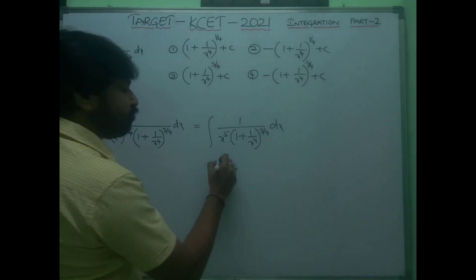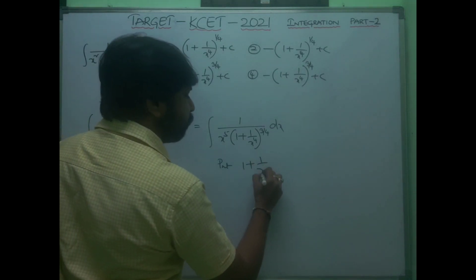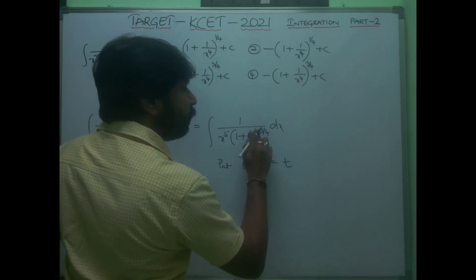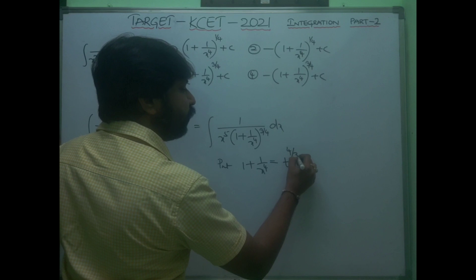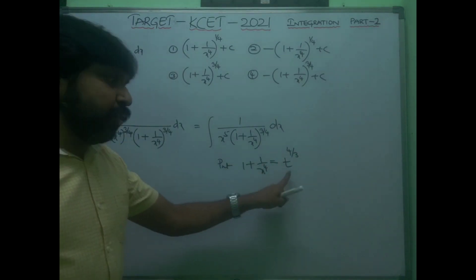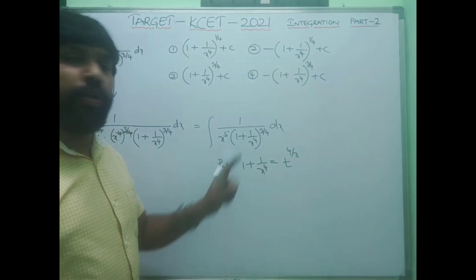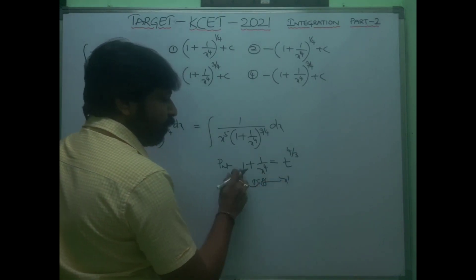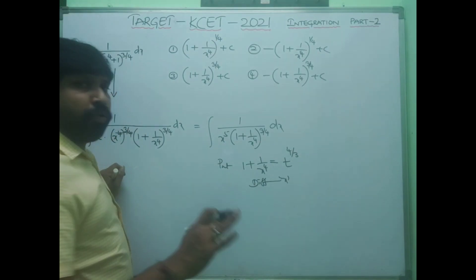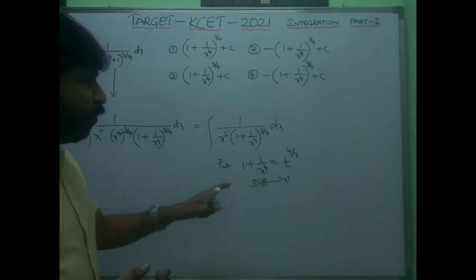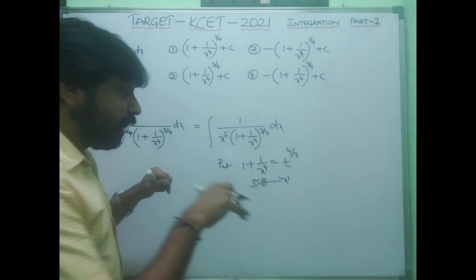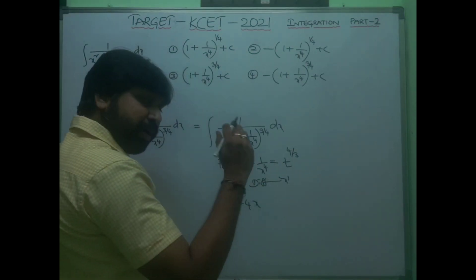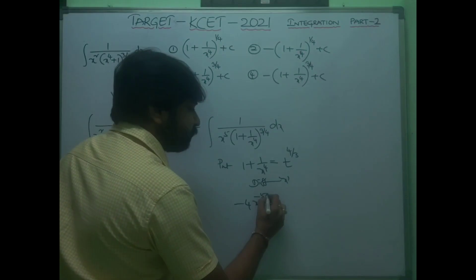Now put t = 1 + 1/x⁴ (or t^(4/3) — either substitution works). Differentiate: derivative of 1/x⁴ = x^(−4), so derivative is −4x^(−5). Then dt with the substitution t^(4/3) gives (4/3)·t^(1/3) dt.